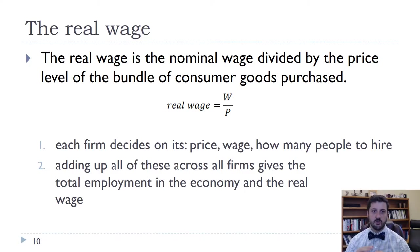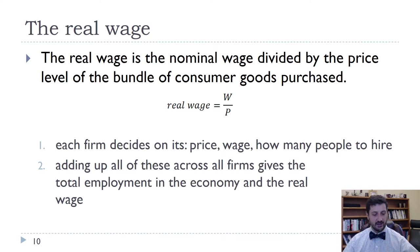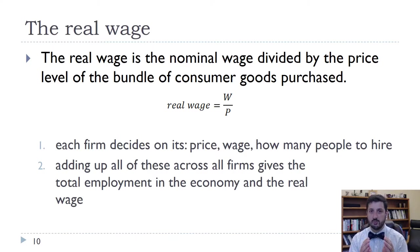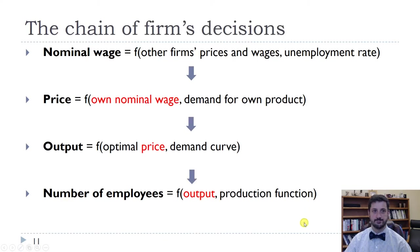Each firm is deciding on its price, its wage, and how many people to hire. Adding all of those up across the economy gives us total employment and the real wage, because the price in the denominator of the real wage is not just one firm's price, but the average price of all goods and services in the economy that firms are charging.